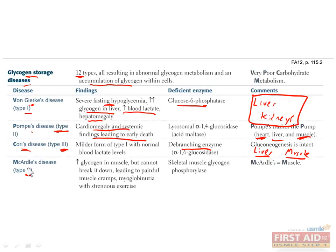Lastly, type 5 glycogen storage disease, or McArdle's disease, is caused by a deficiency of skeletal muscle glycogen phosphorylase. Consequently, this only really affects skeletal muscle and not cardiac muscle. You'll see increased glycogen in muscle with an inability to break it down. Since muscles can't get enough glucose from breaking down glycogen, this can cause muscle cramps, myoglobinuria, and muscle weakness with strenuous exercise.